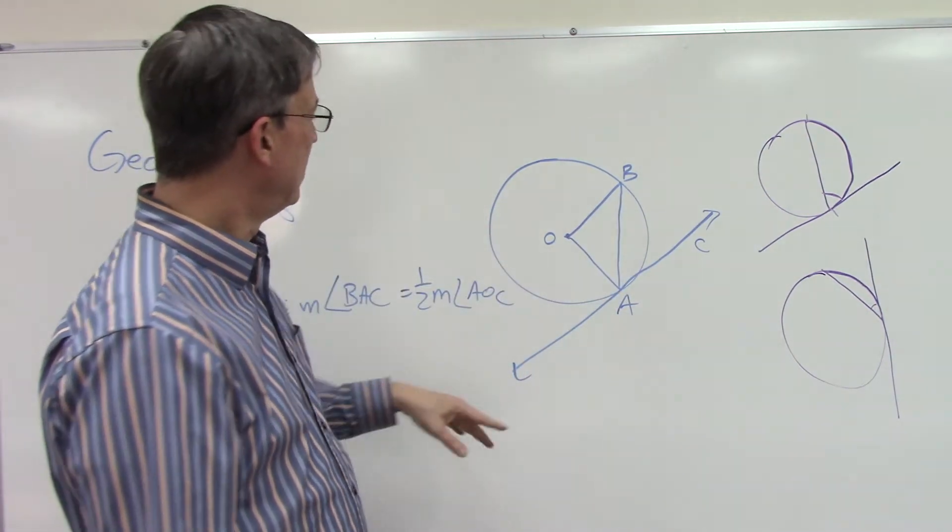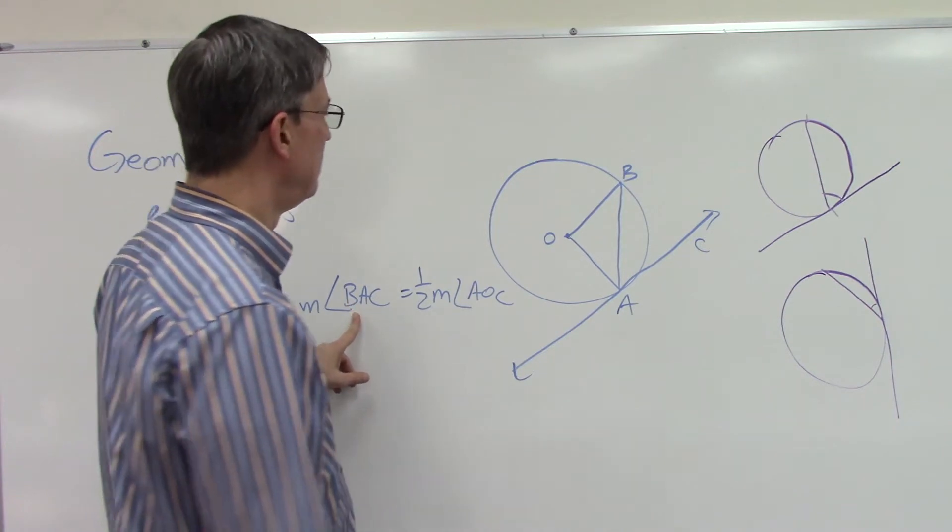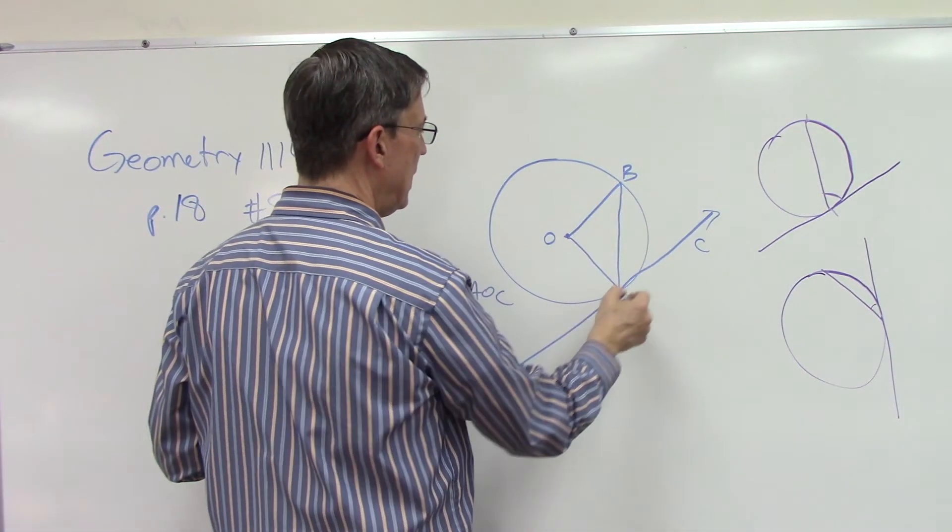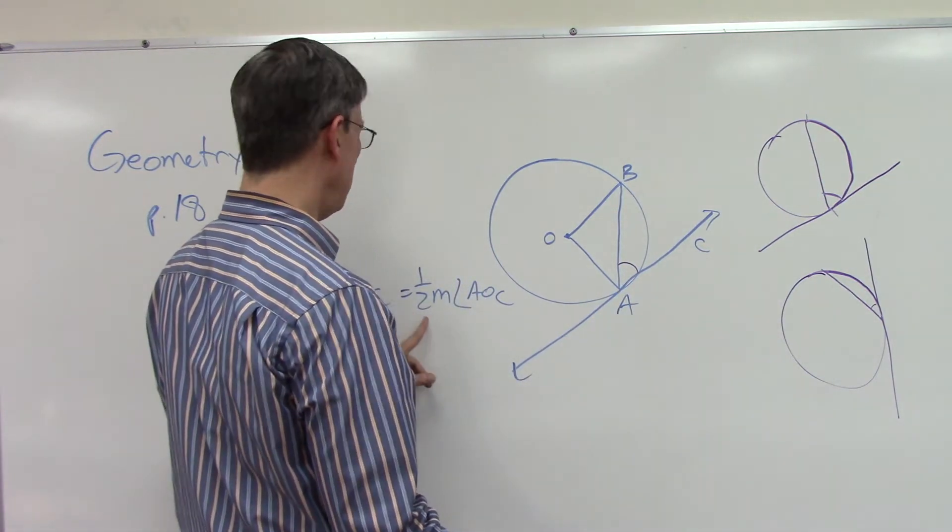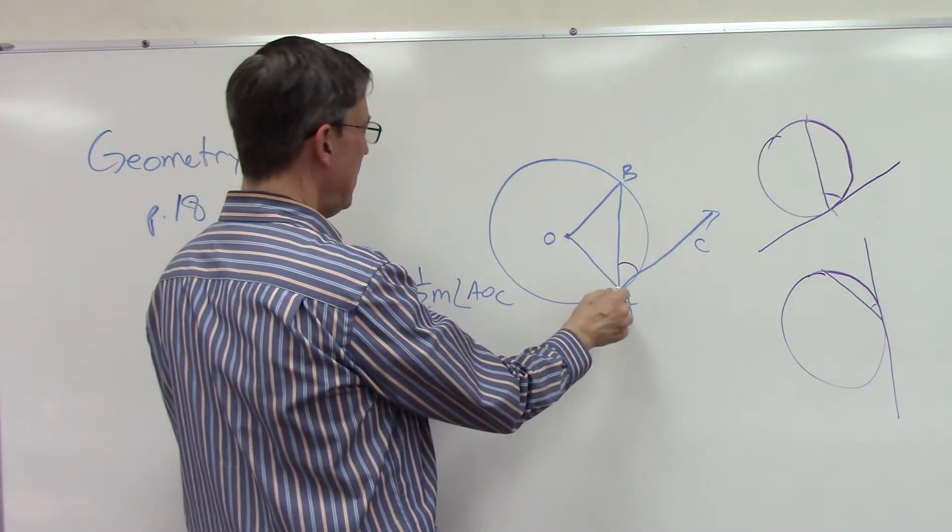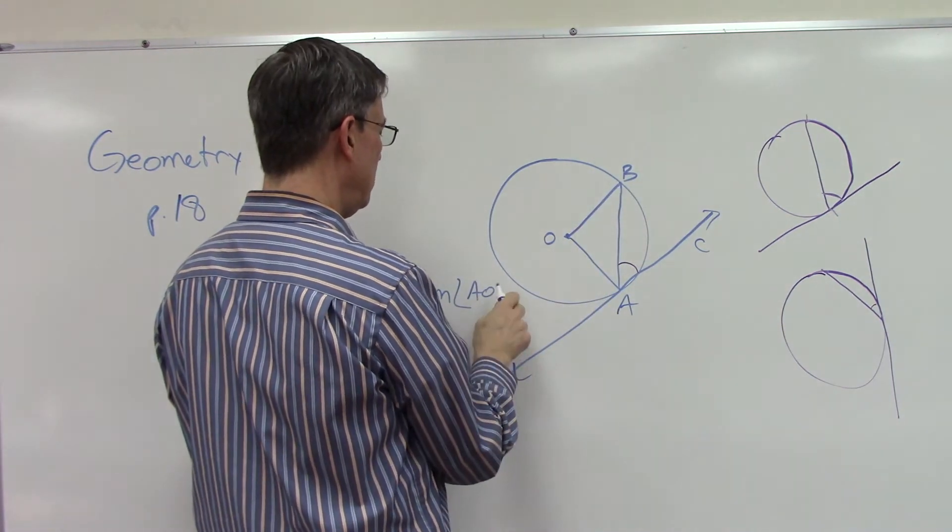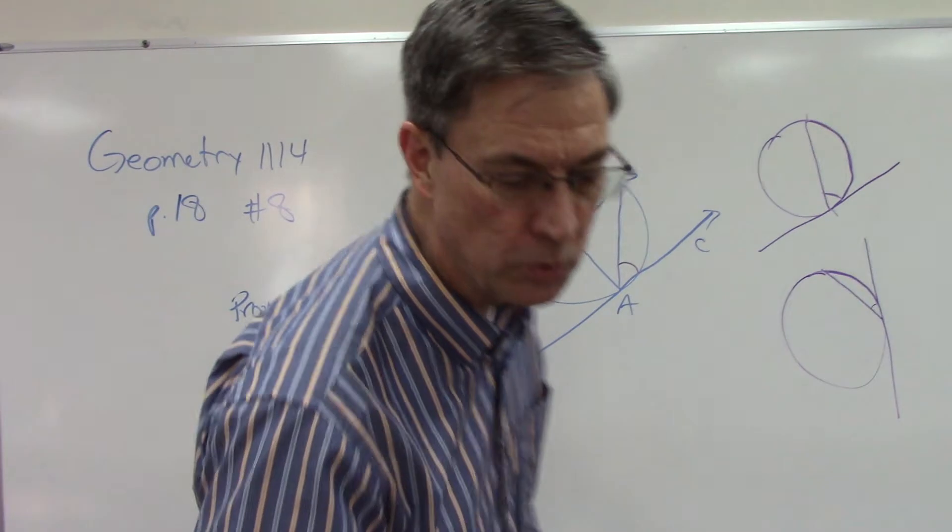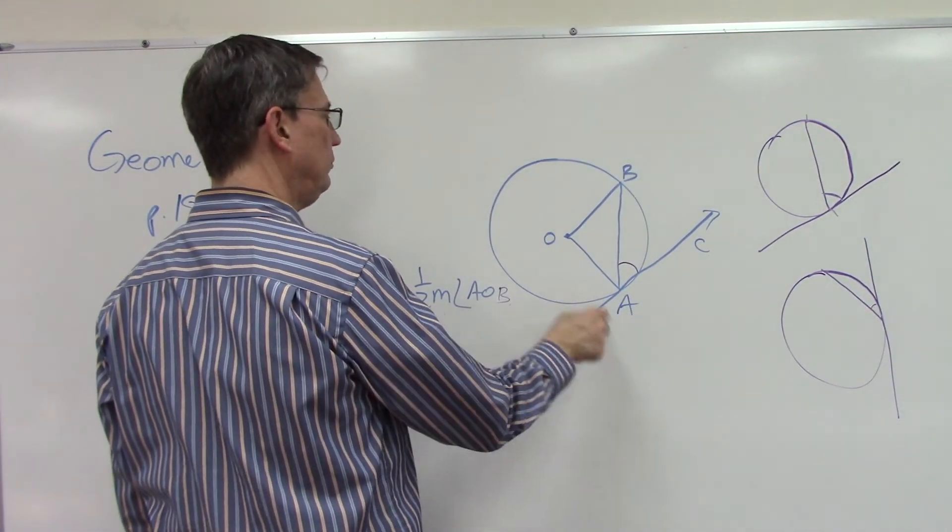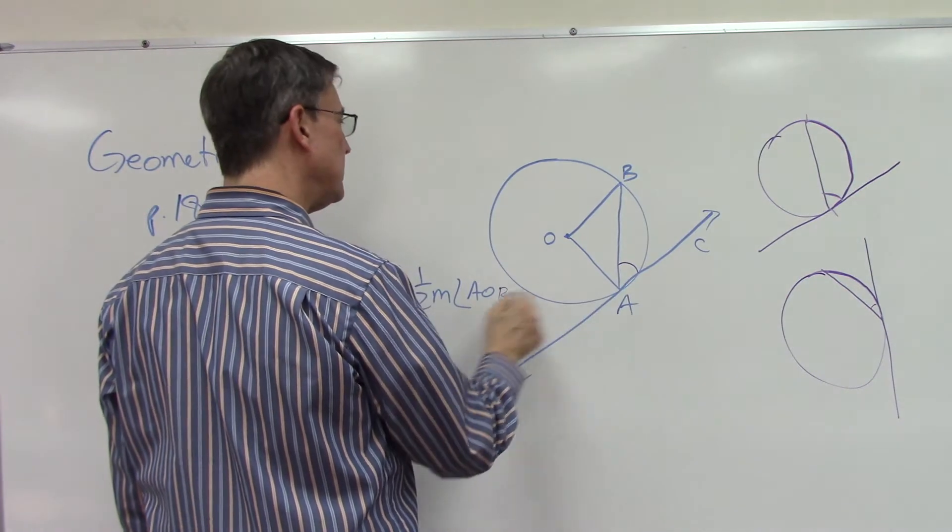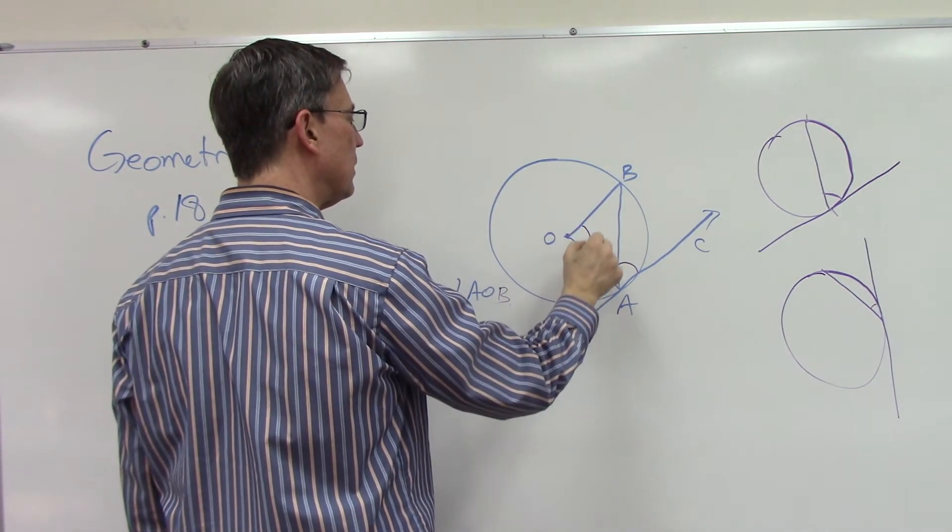So we have all this stuff given, and we're trying to get to the point where we say that angle BAC, so let's label that, is equal to the measure of angle AOB. Okay, and we're trying to say that it's equal to half of AOB, half of this.